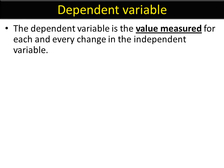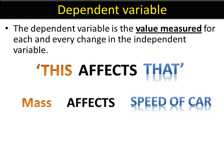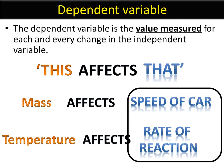The dependent variable is the thing that we measure. So in the relationship 'this affects that,' it is the 'that.' In our earlier examples, the thing that we've measured would be the speed of the car and the rate of the reaction, to find out what effect changing our independent variable has.